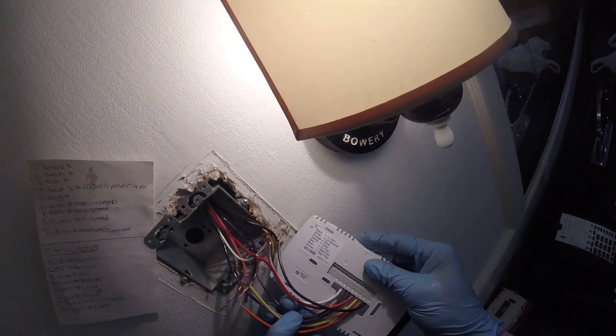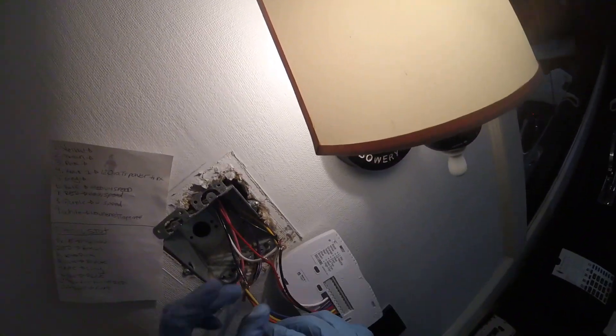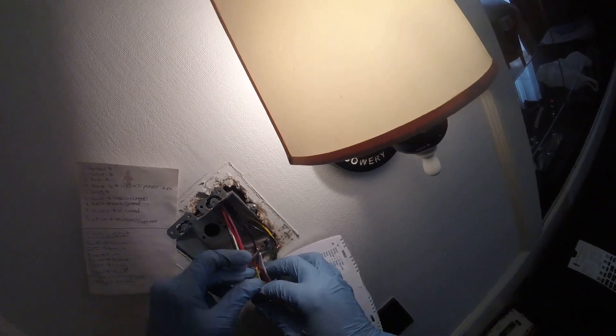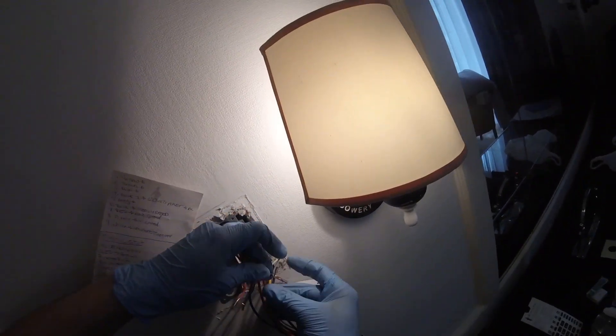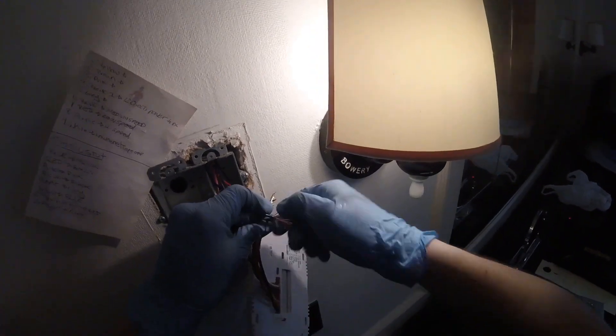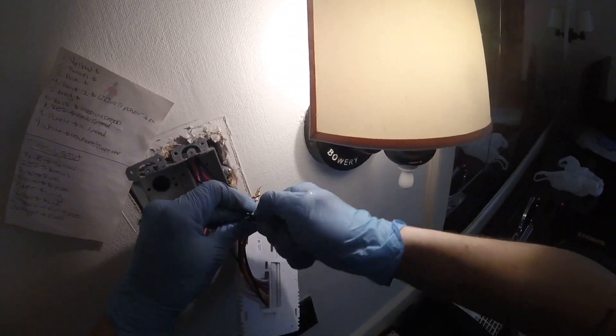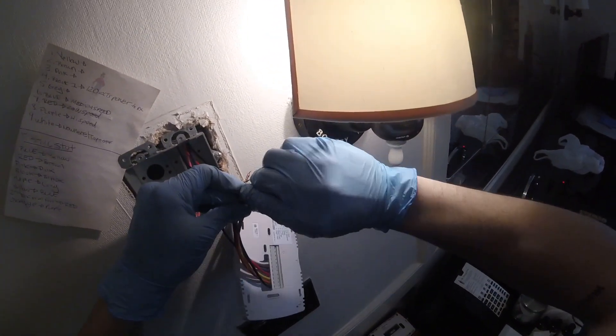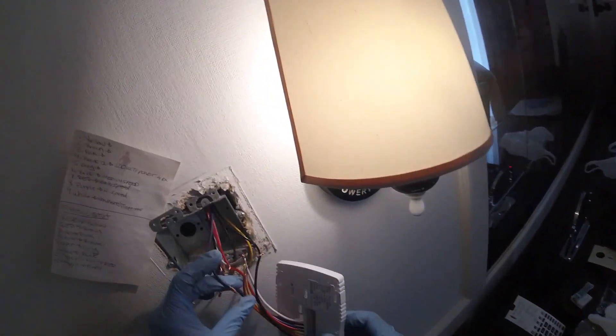Brown on the thermostat, that's high speed, and purple on the wiring. That's our high speed. Alright, so we got power to the thermostat, and we have our three speeds connected.